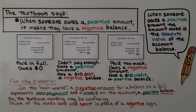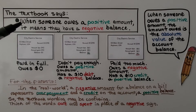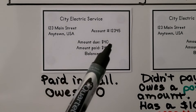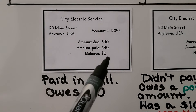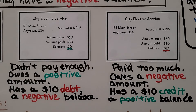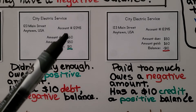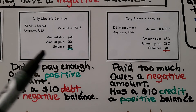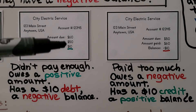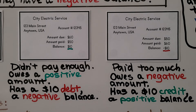There's a part in the textbook that says when someone owes a positive amount, it means they have a negative balance, and that could be very confusing. Let's look at three electric bills. On the first bill, the amount due was $40 and the amount paid was $40, so their balance is zero — they paid in full and owe $0. On the second bill, the amount due was $60 but the amount paid was $50, so they have a balance of $10. They didn't pay enough; they owe a positive $10, which is a negative balance — a debt of $10.